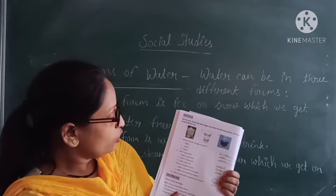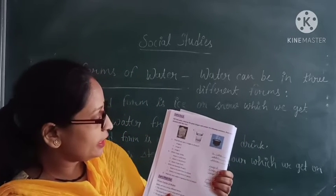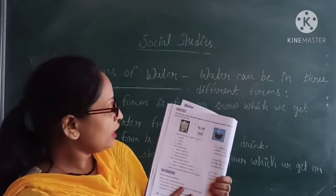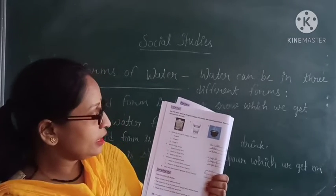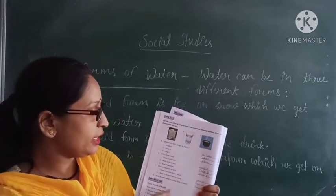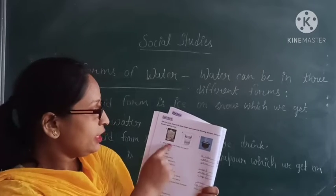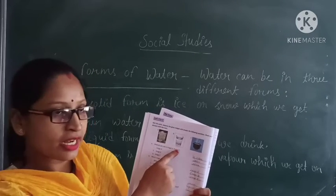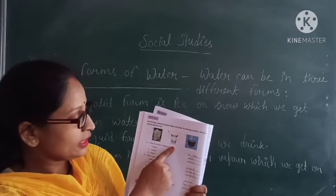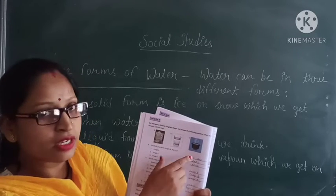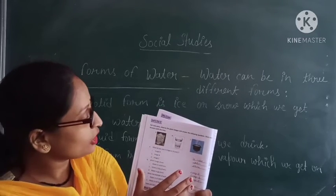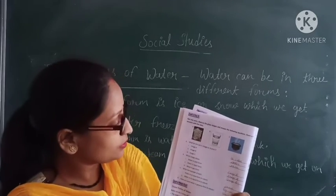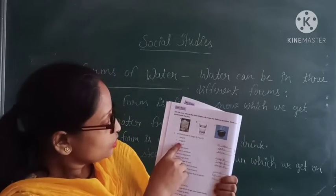What do you see in image A, B, and C? Image A is ice. Image B is water. Image C is steam.